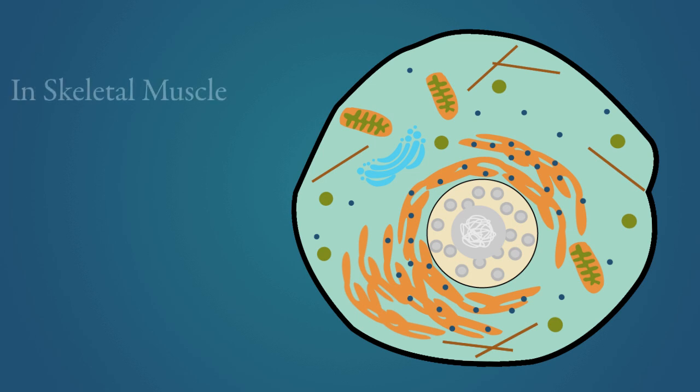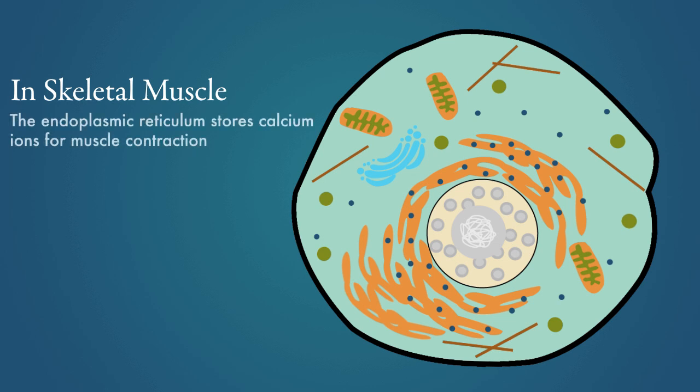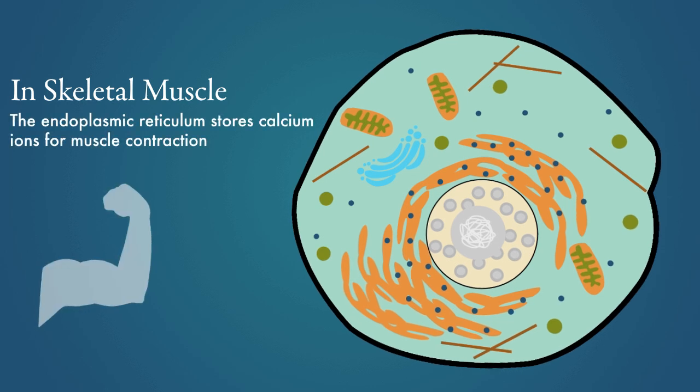In muscle cells that support the skeleton, called skeletal muscle, the endoplasmic reticulum stores calcium ions used when muscles contract.